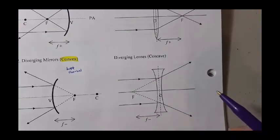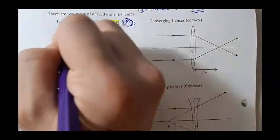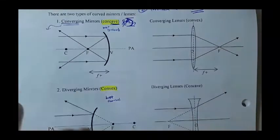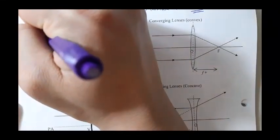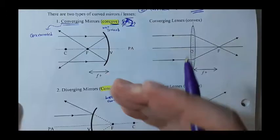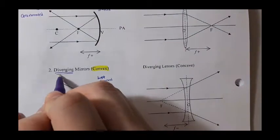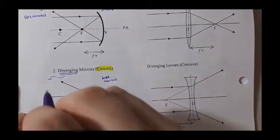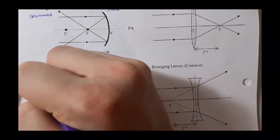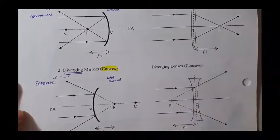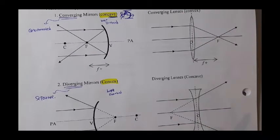You will see the words converging and diverging a lot. Converging — consider that as concentrated, meaning things are going together. Diverging — consider it as the opposite of concentrated. Like the word itself says, it means to separate, so it does not concentrate rays together.